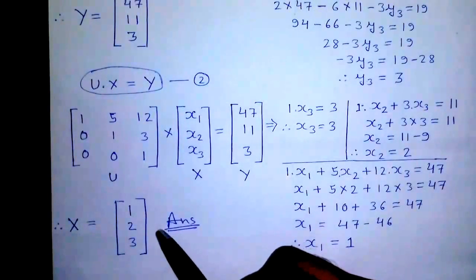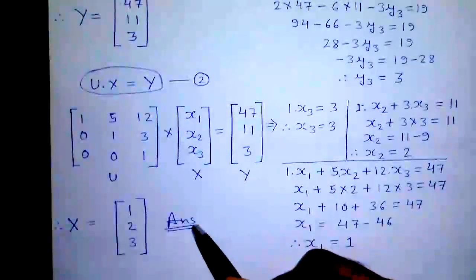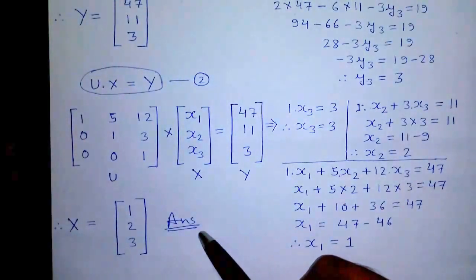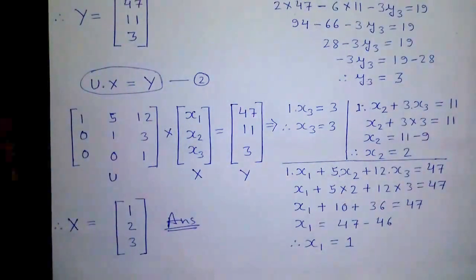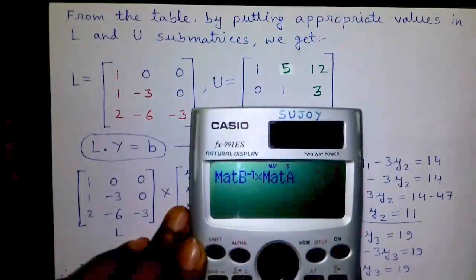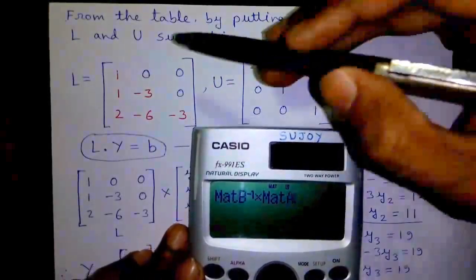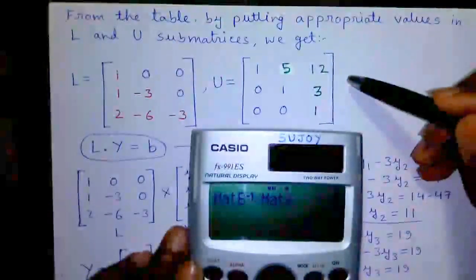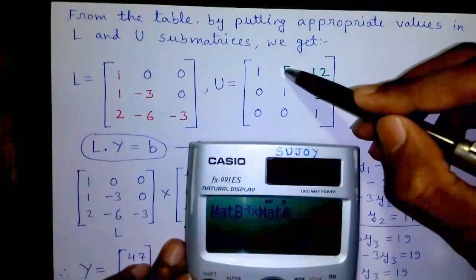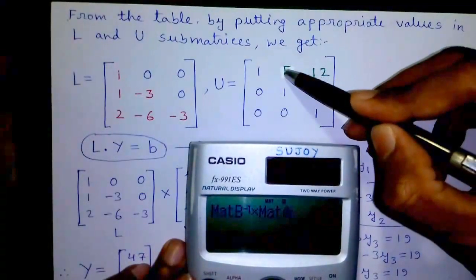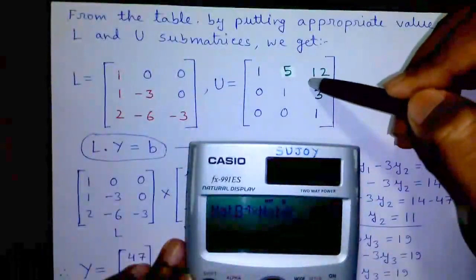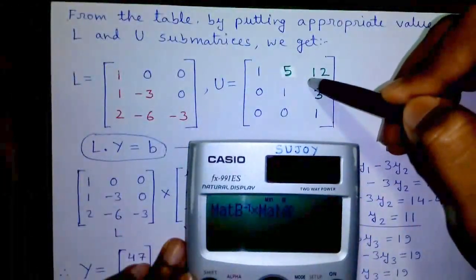Isn't it cool? Now I will tell you some calculator shortcuts to do math easily. Calculator trick number 1: if you have matrix L and original matrix A, you can find out matrix U by the formula L inverse into A equals matrix U.